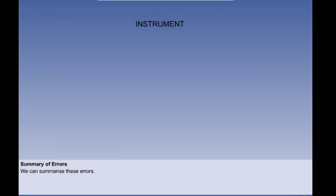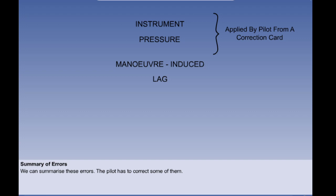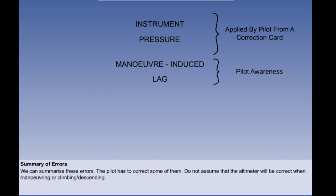We'll now summarise these errors. We have instrument error, pressure error, manoeuvre-induced error, and lag. The first two can be established by workshop measurement and flight trials and a calibration card is placed beside the altimeter. The pilot then has to apply the correction by adjusting his indicated altitude — for instance, if you need to be at 3,000 feet and the correction is minus 80, you fly an indicated altitude of 3,080 feet. There is not much we can do about manoeuvre-induced error or lag except to be aware of it and not rely on the altimeter for an accurate reading when manoeuvring or in a rapid rate of climb or descent.